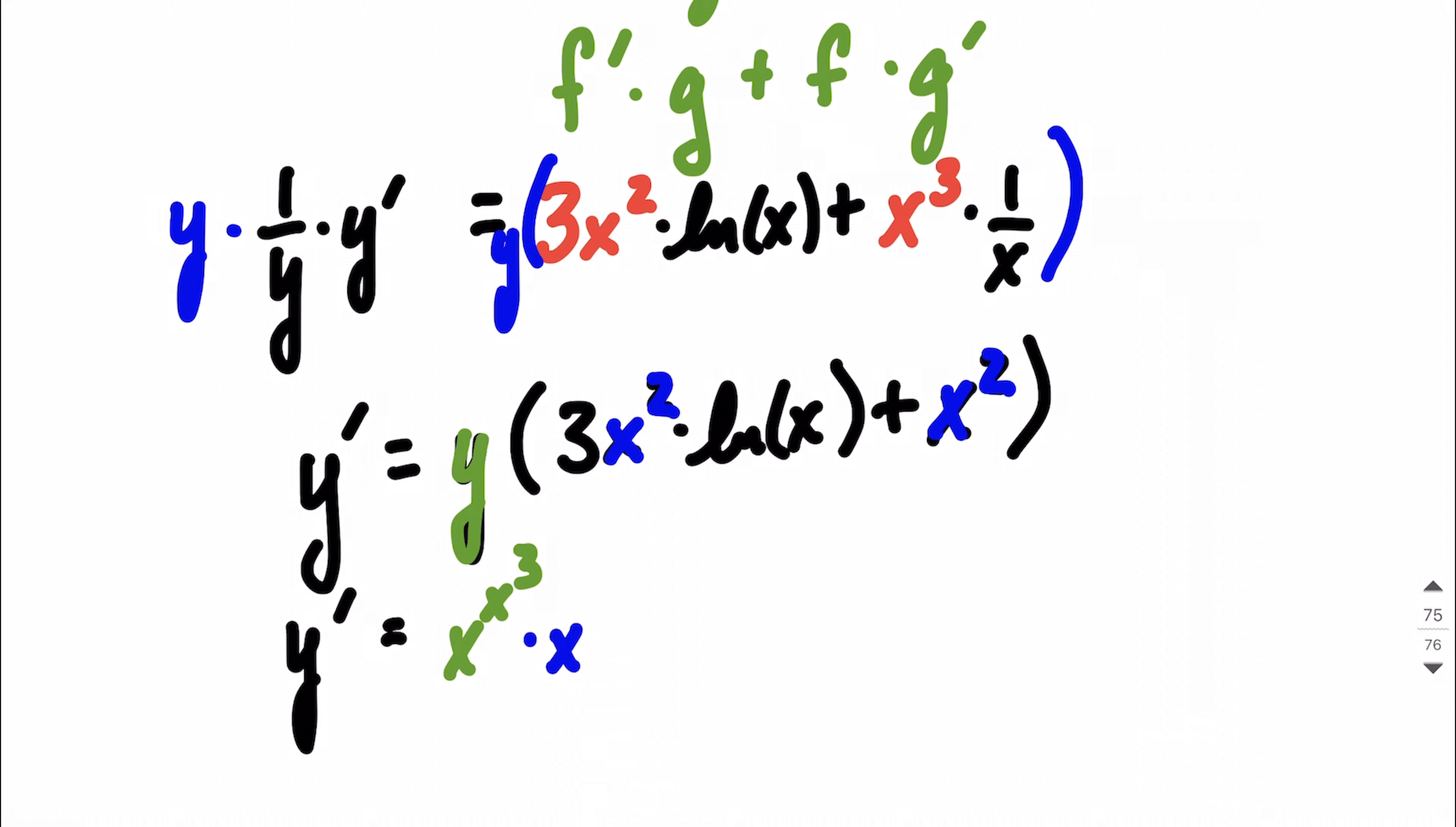And then as we remove those, we're going to be left with 3 natural log of x plus 1 on the inside of our set of parentheses.